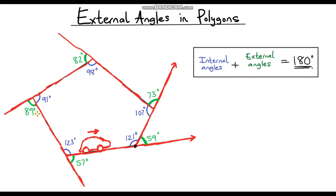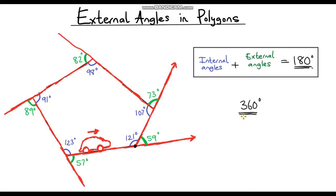Hello and welcome to another video on external angles in polygons. In the previous video we looked at the relationship between internal angles and external angles. From the diagram, they always sum to 180 degrees because they sit on a straight line. So if you know the internal angle you can calculate the external angle by taking it away from 180 degrees. At the end of that video we also found that when we added all the external angles of a pentagon together, we got 360 degrees. In this video we're going to look at what value we get from other polygons.